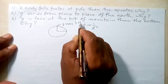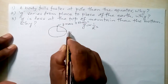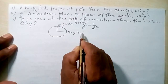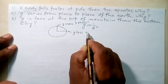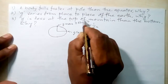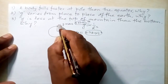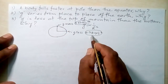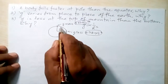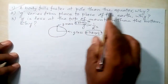The value of g at the poles is 9.83 m/s², as I mentioned in the previous class. At the equator, since the radius is more, g is less — its value is 9.78 m/s². Because of greater acceleration due to gravity, a body falls faster at the pole, while the same body falls slower at the equator due to less acceleration.